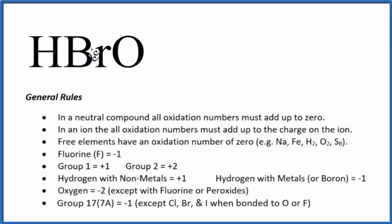To find the oxidation numbers for each element in HBrO, hypobromous acid, we'll use these rules. First thing to notice, there's no negative or positive sign after HBrO. So because of that, this is a neutral compound, and all the oxidation numbers are going to add up to zero. That's important.